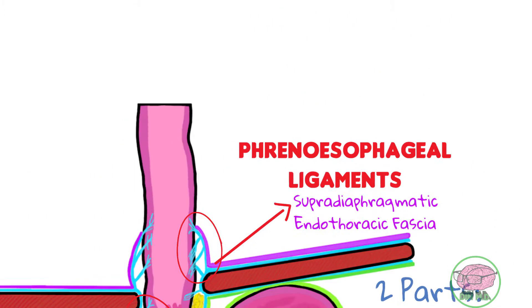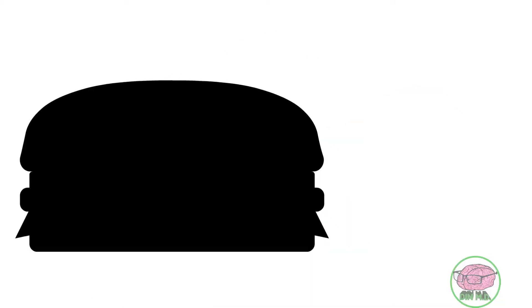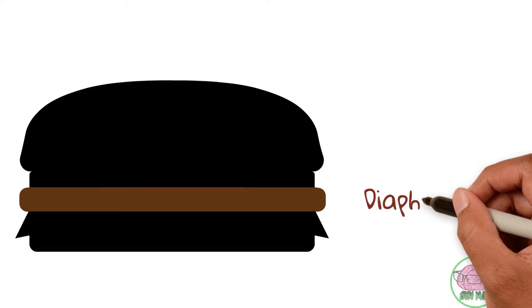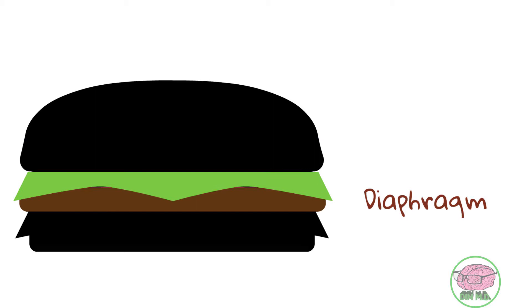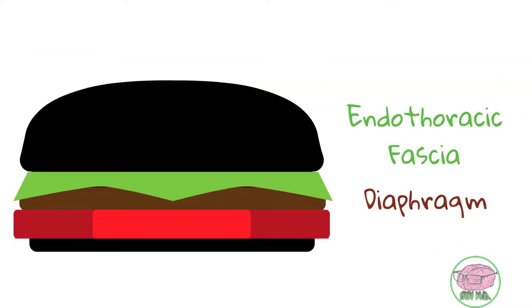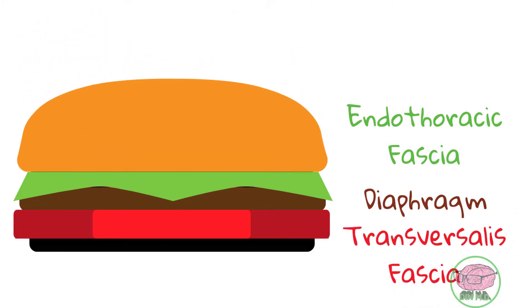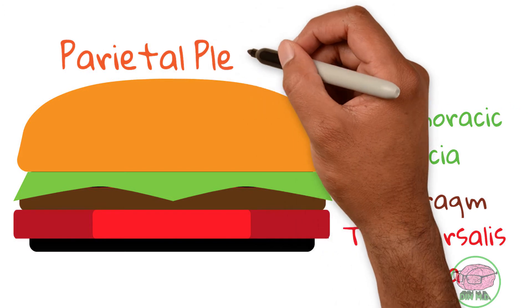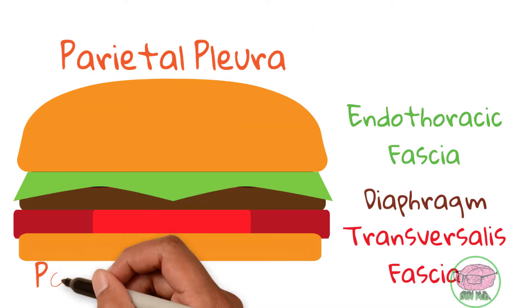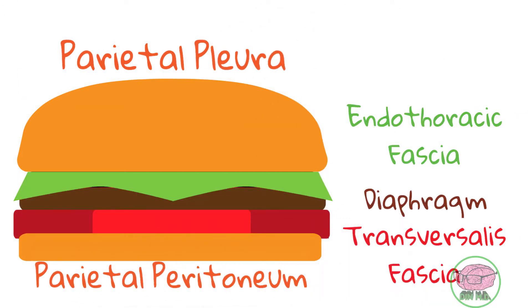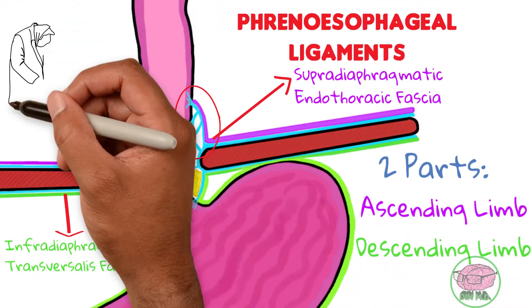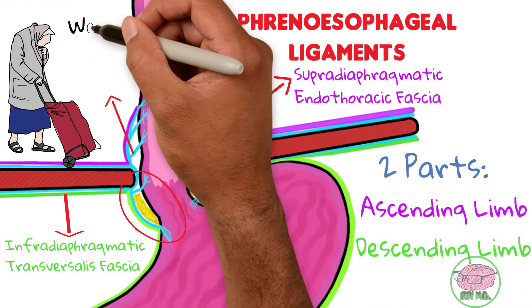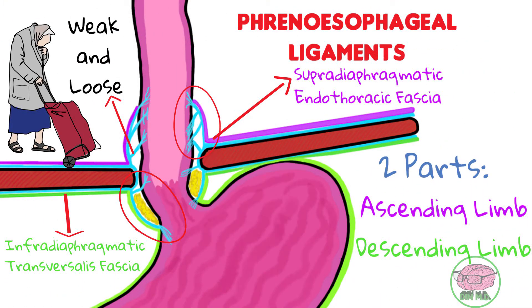So in a certain way, you can think of the diaphragm like a hamburger. The diaphragm will be the meat, the lettuce on top will be the supradiaphragmatic endothoracic fascia, the tomato beneath will be the infradiaphragmatic transversalis fascia, the bread on top will be the parietal pleura, and the bread on the bottom will be the parietal peritoneum. As the age of a person increases, this ligament becomes weaker, which means that the esophagus can move freely through the esophageal hiatus.